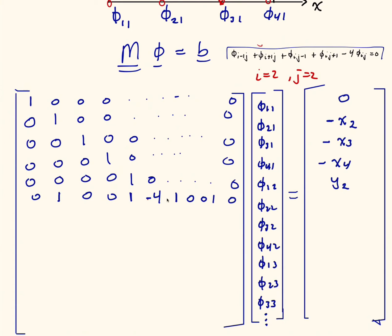That pattern is very similar throughout: you have a -4 on the main diagonal, 1s on the adjacent off-diagonals, and 1s that are nx columns away from the main diagonal. In this case we have a 4-by-4 grid so nx=4, meaning those far off-diagonal 1s are 4 columns away from the main diagonal. For the right-hand side, our discretization gives 0.